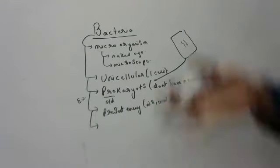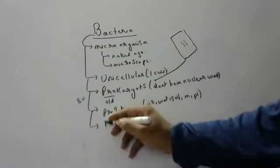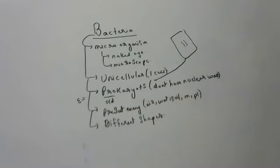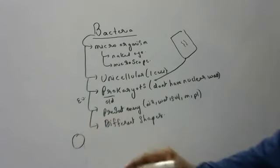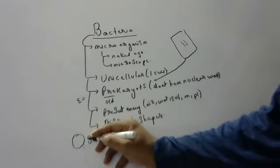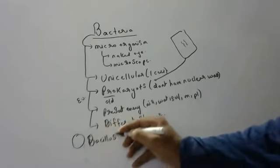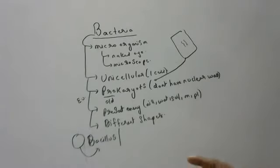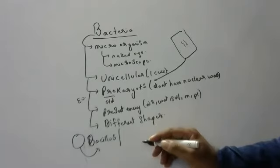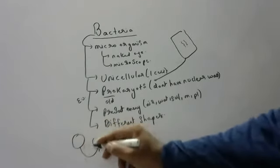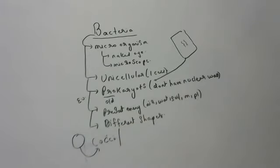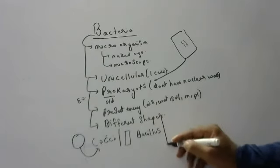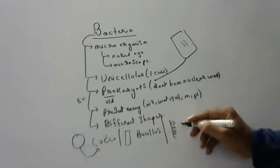Bacteria have different shapes. Some of the famous shapes: if any bacteria is circular, it is called Cocci — sorry, I correct myself — circular bacteria are called Cocci. Rod-shaped bacteria are called Bacillus.